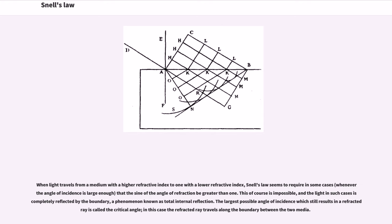When light travels from a medium with a higher refractive index to one with a lower refractive index, Snell's law seems to require in some cases that the sine of the angle of refraction be greater than one. This of course is impossible, and the light in such cases is completely reflected by the boundary, a phenomenon known as total internal reflection. The largest possible angle of incidence which still results in a refracted ray is called the critical angle. For example, in this case the refracted ray travels along the boundary between the two media.